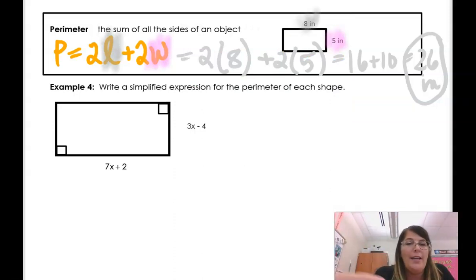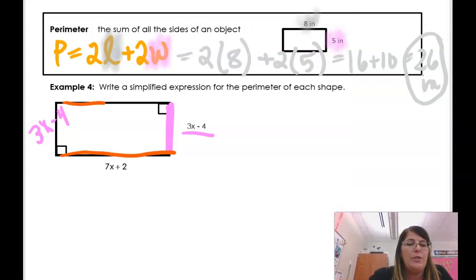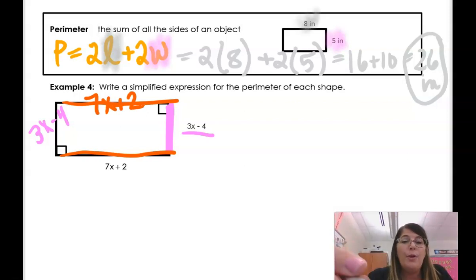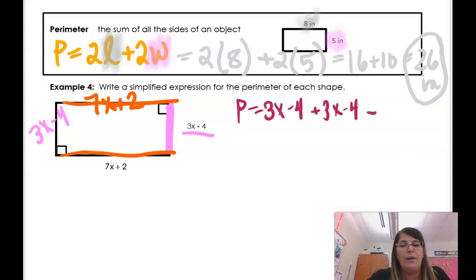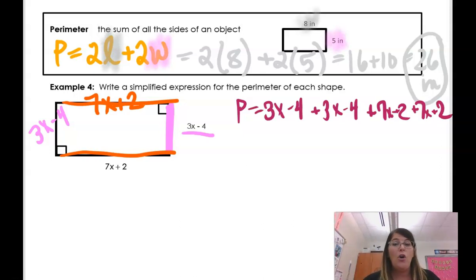Okay. So first things first. If I wanted to, I could say, well, gosh, this is the width. It's 3x minus 4. So that means this side here is 3x minus 4. And this part here is 7x plus 2. So in a rectangle, this is also 7x plus 2. And the perimeter is the sum of all the sides.